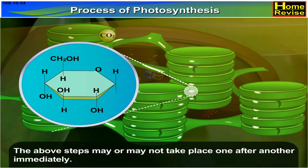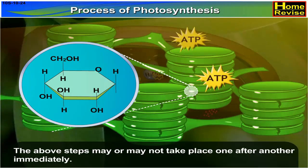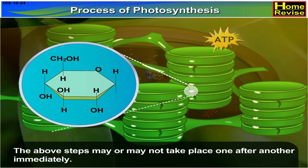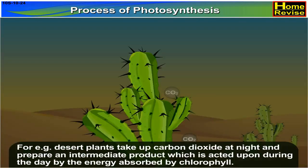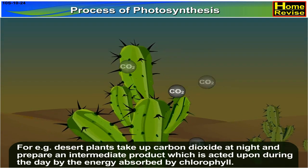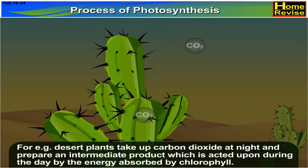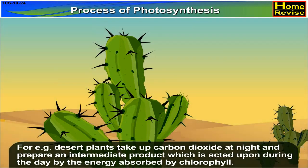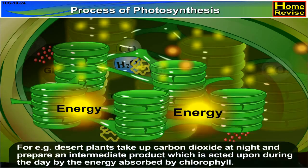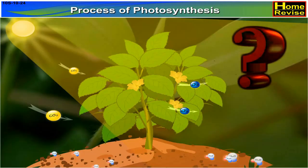The above steps may or may not take place one after another immediately. For example, desert plants take out carbon dioxide at night and store an intermediate product, which is acted upon during the day by the energy absorbed by chlorophyll.